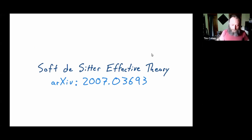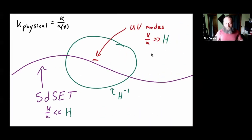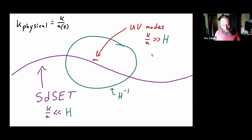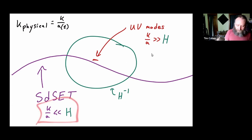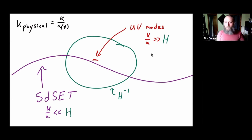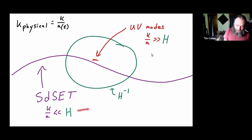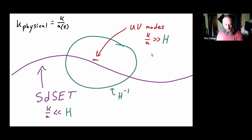Let's get into the effective theory we're going to use to actually calculate these things. Dan and I wrote down the soft de Sitter effective theory in the middle of last year. The basic idea is we're interested in the long wavelength limit. De Sitter provides us with a natural ruler — namely the horizon. We want to power count in the standard continuum EFT sense, where the limit we're interested in is the physical momentum much less than the Hubble horizon. UV modes have K/a much greater than H; IR modes have K/a much less than H. We follow essentially an HQET-like rule book and derive an effective theory starting from the UV theory.